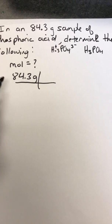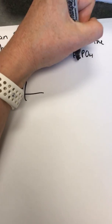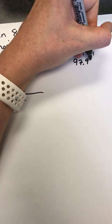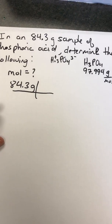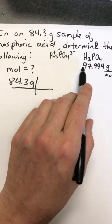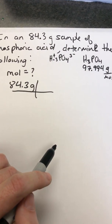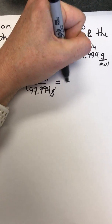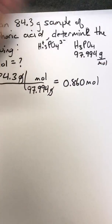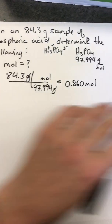We want the number of moles in 84.3 grams of H₃PO₄. The molar mass is 97.994 grams per mole — the mass of three hydrogens, one phosphorus, and four oxygens. Since 84.3 grams is less than 97.994, we expect less than one mole. Dividing 84.3 by 97.994, grams cancel and we're left with 0.860 moles.